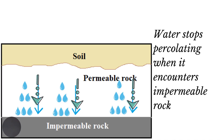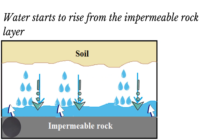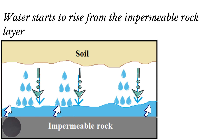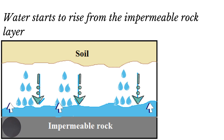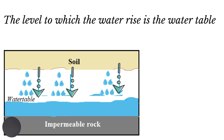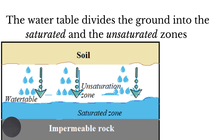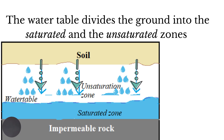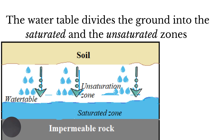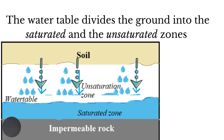Percolation will continue until an impermeable layer of rock is reached. After this, the water will begin to rise from the impermeable layer of rock. The level to which the water rises is called the water table. The water table divides the ground into two zones — above the water table is the unsaturated zone, where the pore spaces are not completely filled with water.